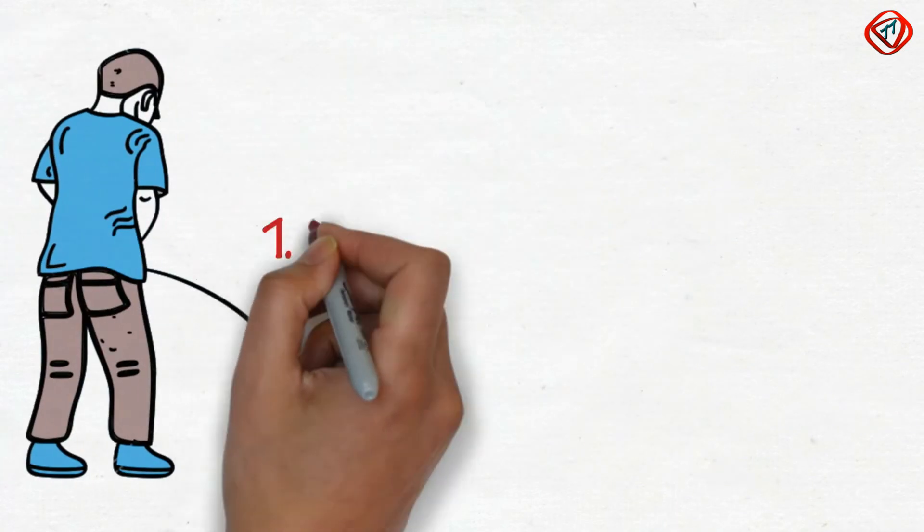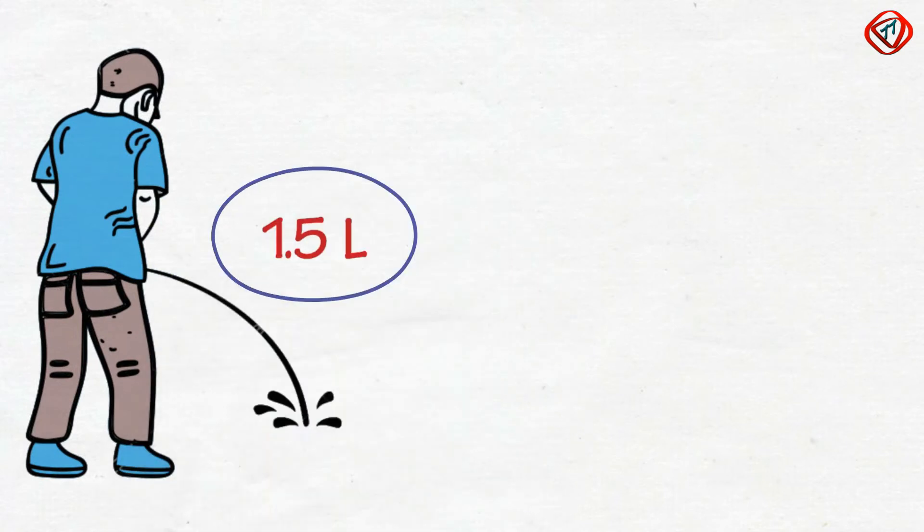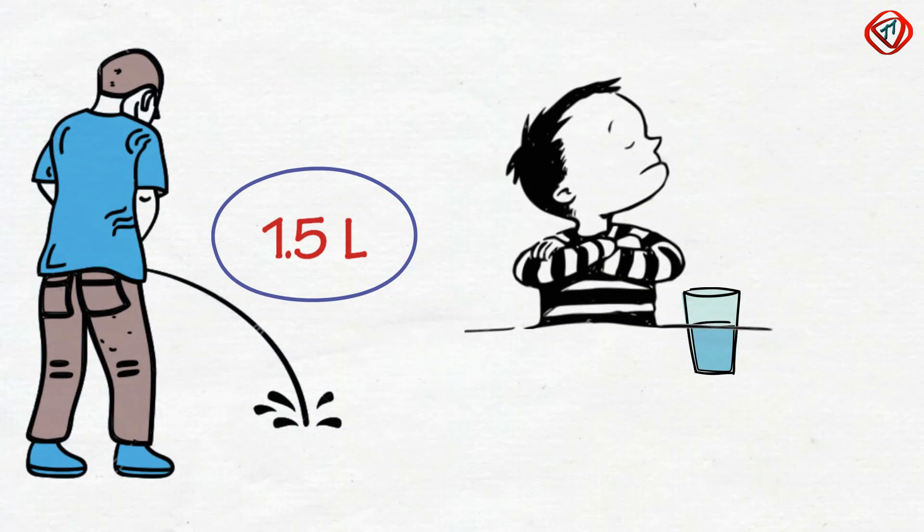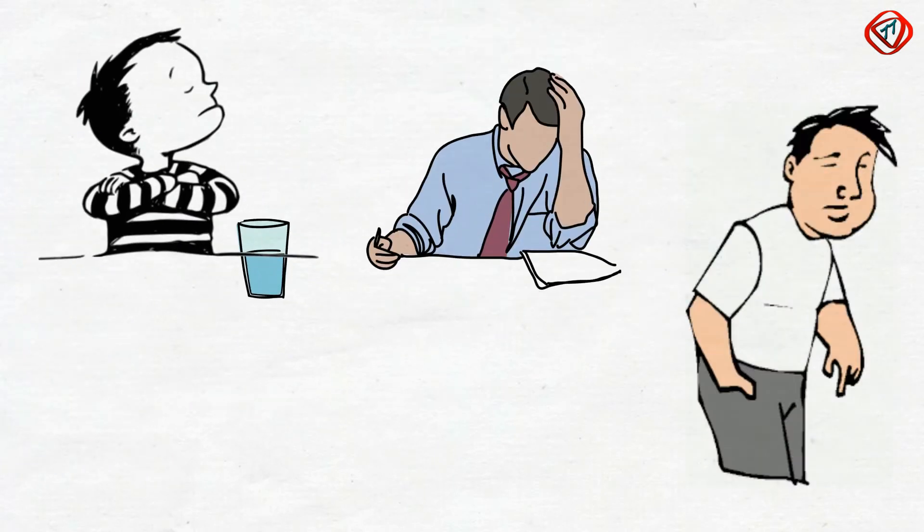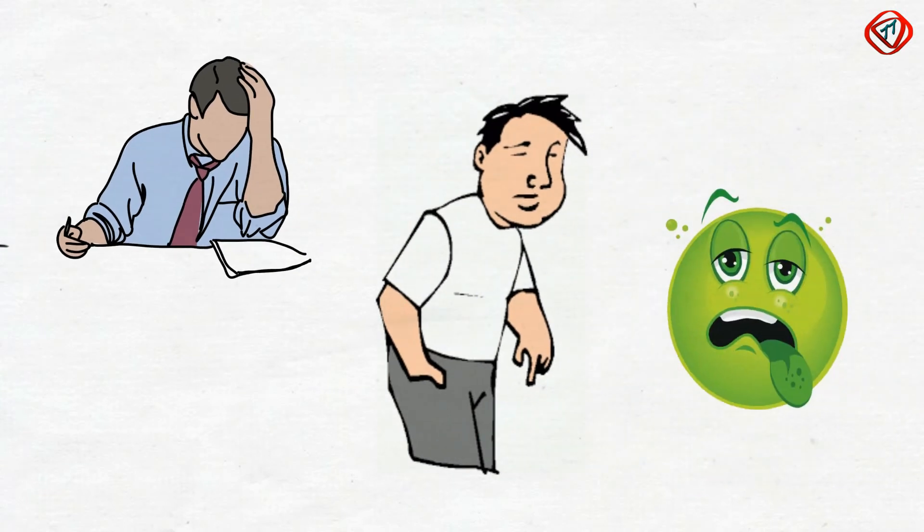But urination removes nearly 1.5 liters of water from our bodies every day. If this loss of water is not compensated, then we will enter a stage of dehydration, feeling headaches, exhaustion, and even vomiting in the later stages of dehydration.